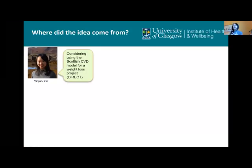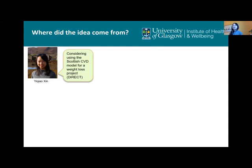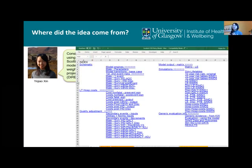I'll start with where this idea came from. I was working on a weight loss project called Direct — some of you probably already heard of it. Because the intervention is super effective, we wanted to use a model to look at long-term outcomes. The Scottish CVD model was one of the many options we were looking at, and it was developed here in Kitea in Glasgow, so the model was available in-house.